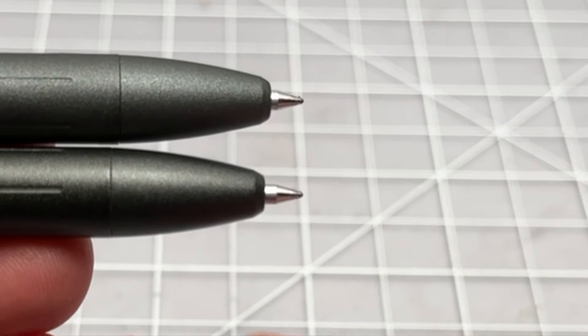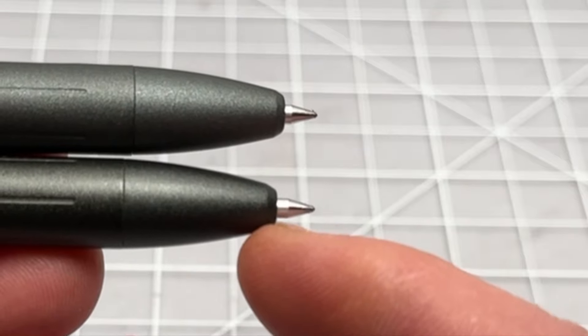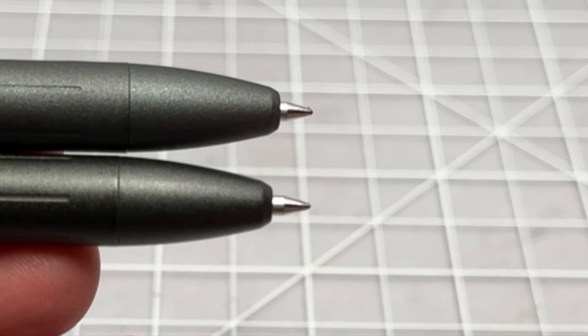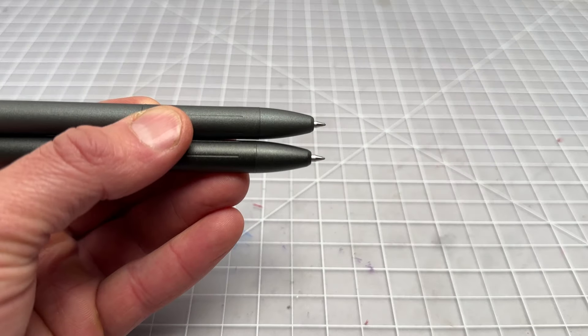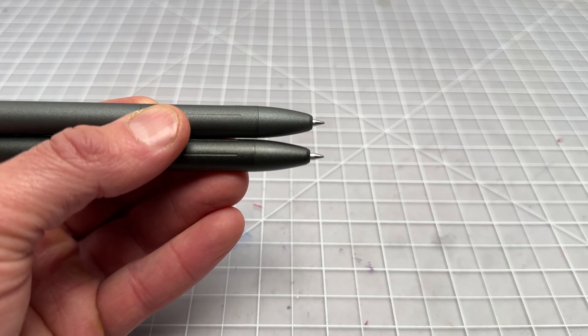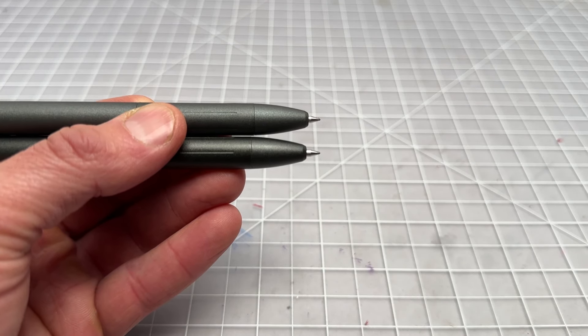What you want to look for is the amount of that flat area here is more exposed compared to the flat area here. Again it's the same refill so this one you can see more of that flat, that means it's more extended than it was previously. It's a very small difference but they said that makes it more clear what you're writing.